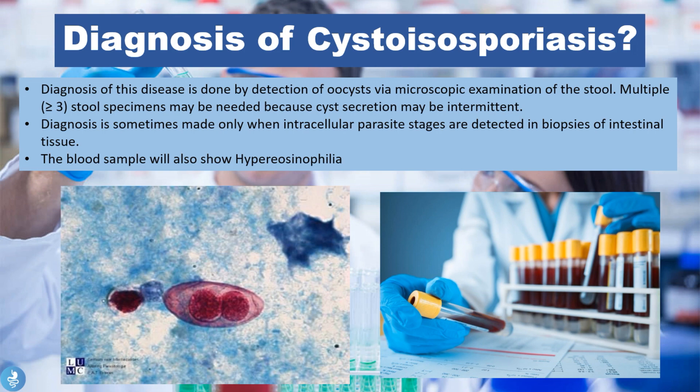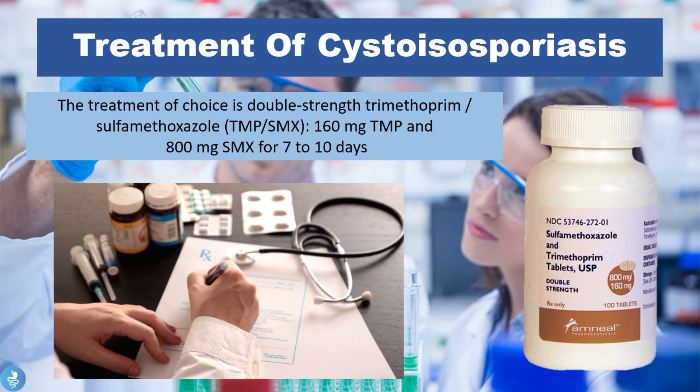Finally, let's talk about the treatment of cystoisosporiasis. The treatment of choice is a double-strength trimethoprim-sulfamethoxazole, or TMP-SMX, usually given at 160 milligrams TMP and 800 milligrams of SMX for 7 to 10 days.